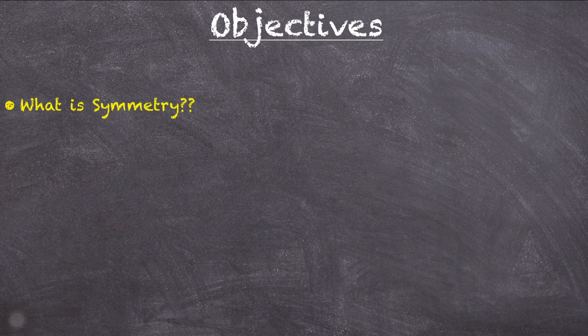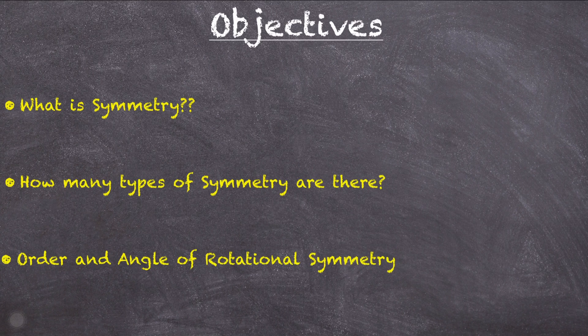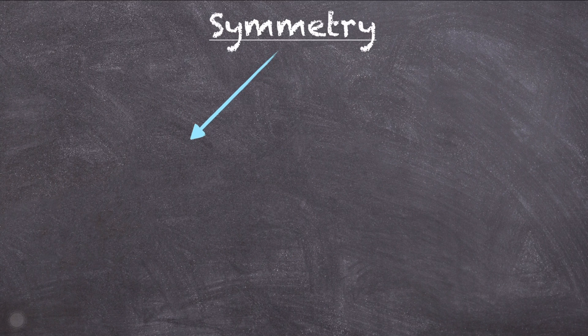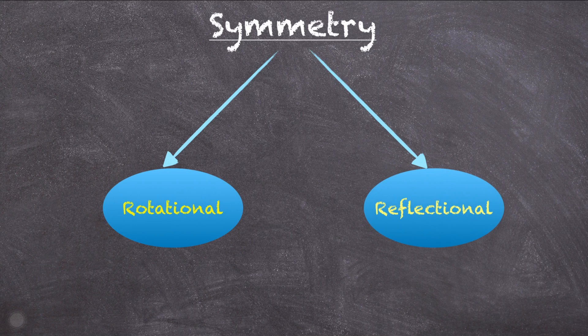Let's discuss the objectives for today's video lesson. Number one, we're going to discuss what symmetry is. Number two, we'll talk about the types of symmetry there are. And number three, we're going to talk about the order and the angle of rotational symmetry. Symmetry can be divided into two components: rotational symmetry and reflection symmetry. In today's video lesson, we will just be focusing on rotational symmetry.